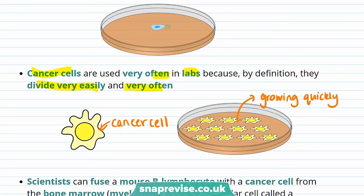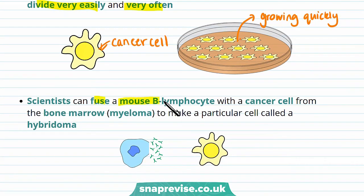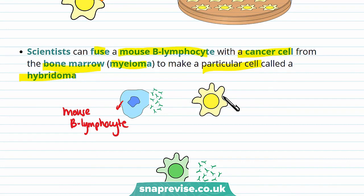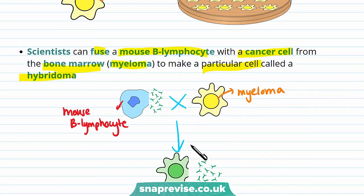Scientists can then fuse a mouse B lymphocyte with a cancer cell from the bone marrow, called a myeloma. This makes a particular cell called a hybridoma. So this mouse B lymphocyte and this cancer cell or myeloma fuse together to produce a hybridoma.